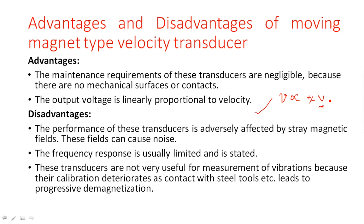The magnetic material moves in a to-and-fro motion between two fixed coils. If anything goes wrong — if the magnet loses its magnetism — the device stops working and we cannot measure velocity. These transducers are not very useful for measurement of vibrations; they can only measure the velocity of slowly moving items.